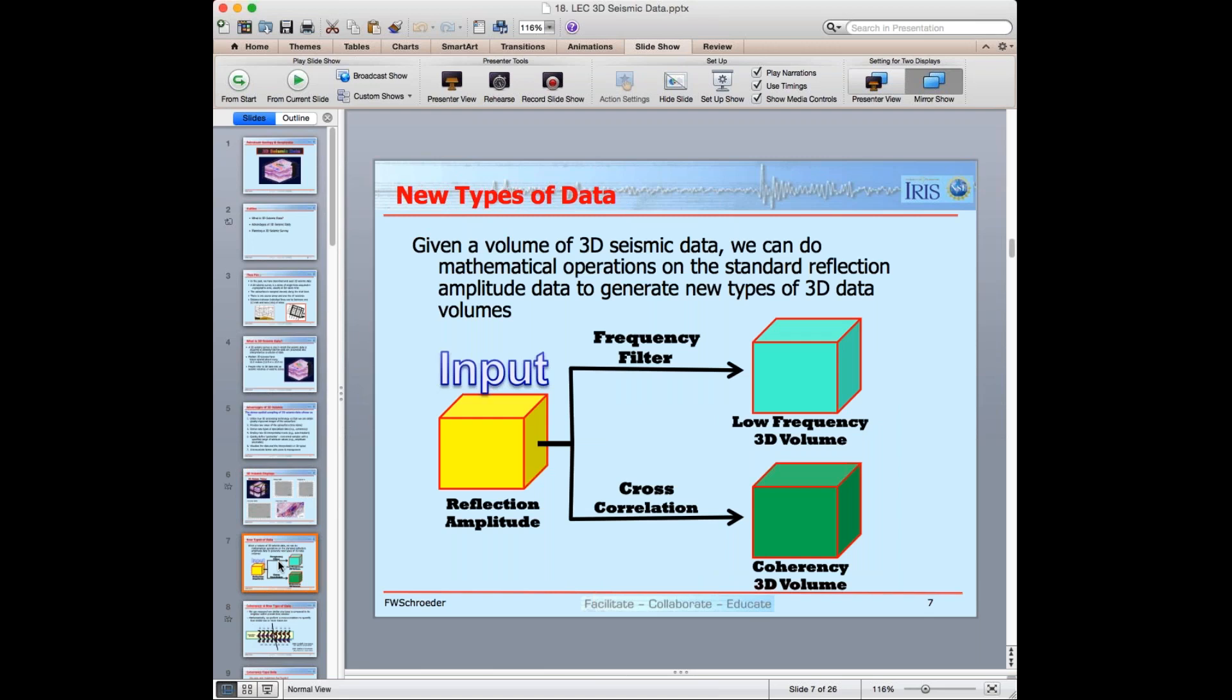So the next slide, new types of data. If I have a volume of 3D seismic data, we can do different mathematical operations, starting with the reflection amplitude cube, which is the yellow one on the left that says input. And we can do some sort of mathematical operation and generate a new three dimensional volume. So the reflection amplitude of the yellow cube has, let's say, XY and two-way travel time and displays magnitude of the reflection amplitudes. We can do some sort of a frequency filter and get XY to a travel time and low frequency information. Or the lower path, the darker green, we can do a cross-correlation and we can get what is called a coherency 3D volume.